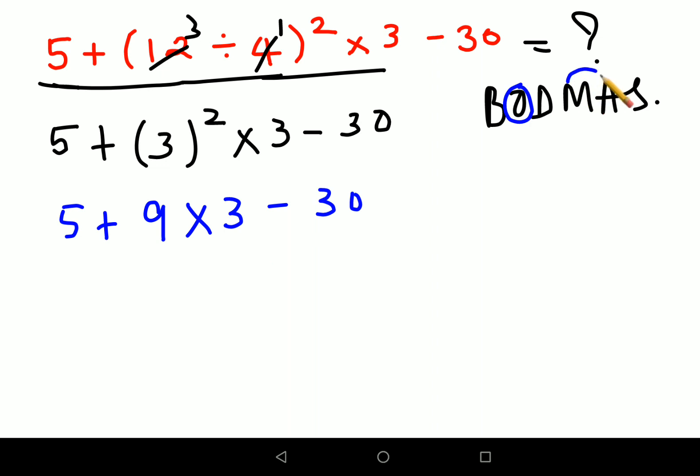The next thing you should do is multiplication should be done before addition and subtraction. So we will keep 5 as it is, plus 9 into 3 gets you 27, minus 30.